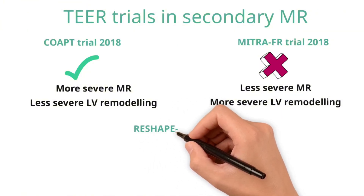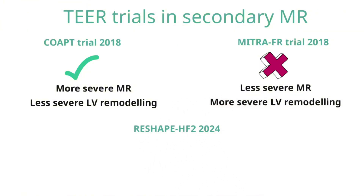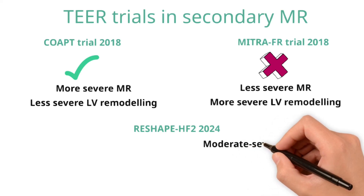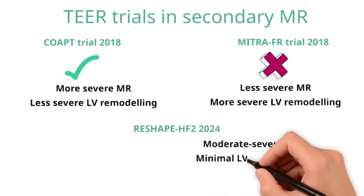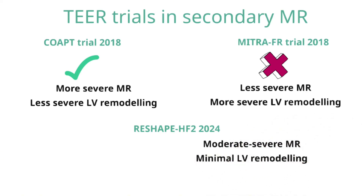More recently, the RESHAPE-HF2 trial looked at patients with less severe mitral regurgitation, but also less severe LV dilatation and remodelling than the Mitra FR trial, and was able to demonstrate reduced rates of a composite of hospitalisations and mortality. Therefore, moving forward, patients with less significant left ventricular remodelling or dilatation but moderate to severe functional mitral regurgitation might well benefit from TEER after discussion in an MDT.